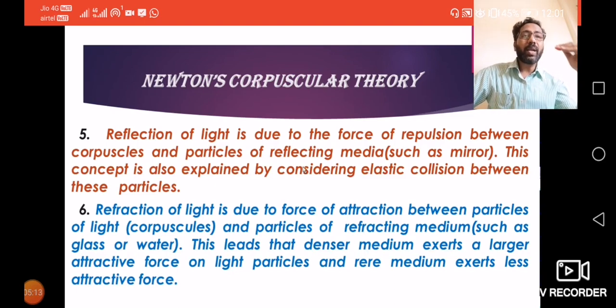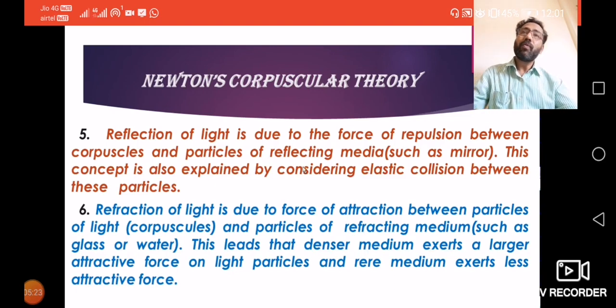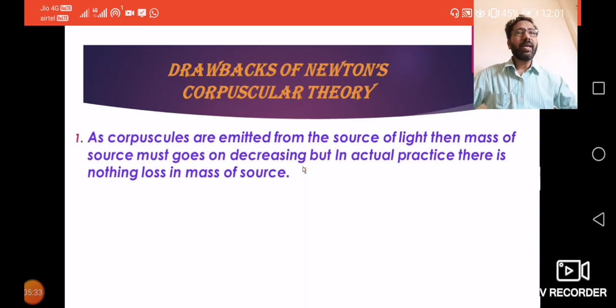Reflection and refraction are well explained by this theory. Ye toh achha se explain kiye, but there are so many drawbacks in this theory. First, we have to discuss these drawbacks. Look at the drawbacks of Newton's corpuscular theory. As initially we considered, light is emitted in the form of small particles.